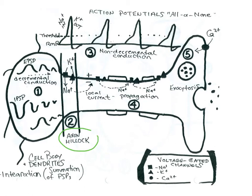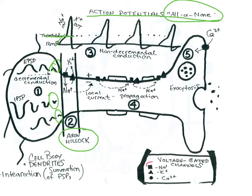Now let's look at what's going on at the axon hillock. This is where these graded potentials are going to stimulate the cell to either elicit an action potential or not — remembering that action potentials are all or none. The graded responses come in through spatial and temporal summation, and if it is above threshold, voltage-gated sodium channels open up. As a result, sodium moves into the cell, and remembering that sodium moving into the cell causes a depolarization.